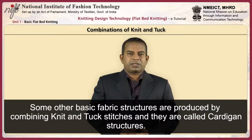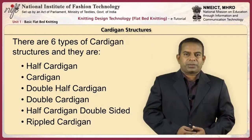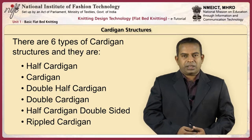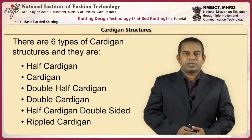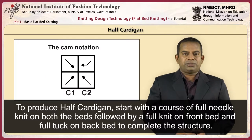Some other fabric structures are produced by combining knit and tuck stitches — these are called cardigan structures. Since the presence of tuck stitch doubles up the loop on a single needle hook, the bulkiness increases in the knitted structure and also increases its stretchability. There are six types of cardigan structures: half cardigan, cardigan, double half cardigan, double cardigan, half cardigan double-sided, and ripple cardigan. To produce half cardigan, start with a course of full needle knit on both beds, followed by a full knit on the front bed and full tuck on the back bed to complete the structure.